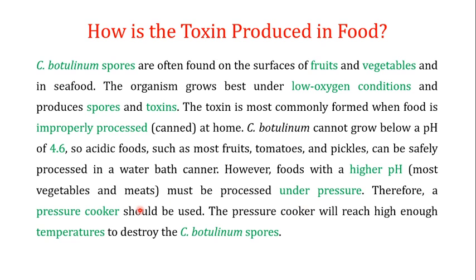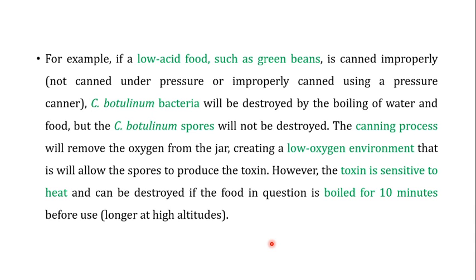When dealing with higher-pH foods you must process them under pressure using a pressure cooker to destroy the C. botulinum spores. For example, if low-acid food such as green beans is improperly canned — not processed under pressure — boiling water will destroy the bacteria but not the spores. The canning process then removes oxygen from the jar, creating a low-oxygen environment that allows the surviving spores to produce toxin. However, the toxin is sensitive to heat and can be destroyed by boiling the food for 10 minutes before use — 15 minutes at higher altitude.